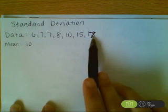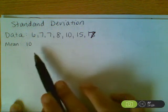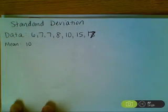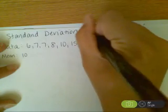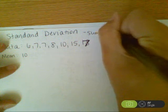When I added up all these numbers, I got 70. Since there's 7 values, I divided by 7 and got a mean of 10. Remember that the standard deviation is the sum of the